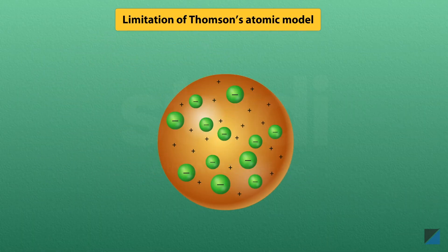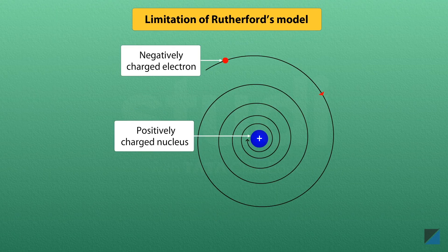Thomson's atomic model explained the overall neutrality of an atom, but its assumption that the total mass of an atom is uniformly distributed all over the atom was inconsistent with some of the experimental results. The atom as described by Rutherford's model was expected to be unstable because an electron moving in circular motion should radiate energy continuously, so it should follow a spiral path and fall into the nucleus.